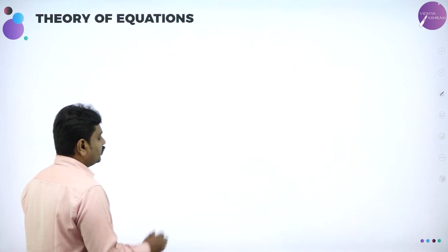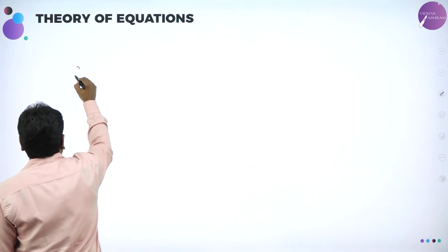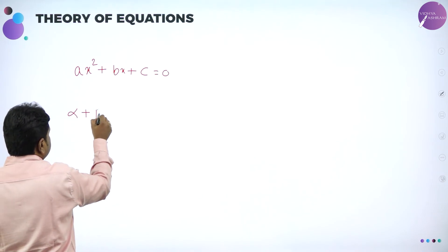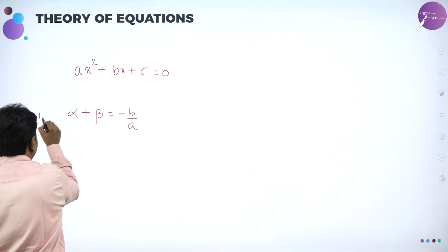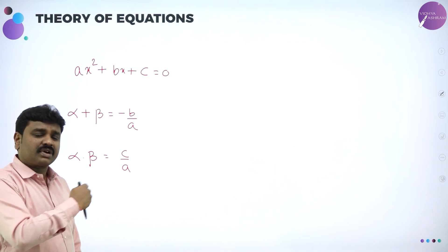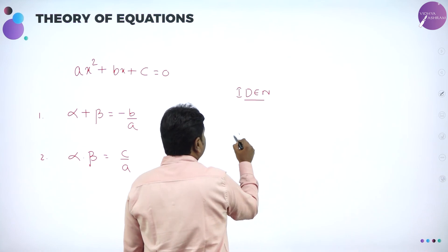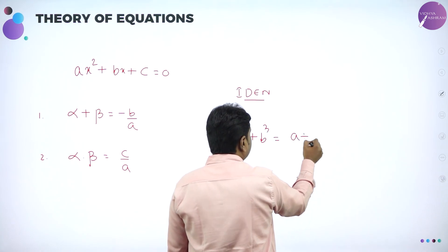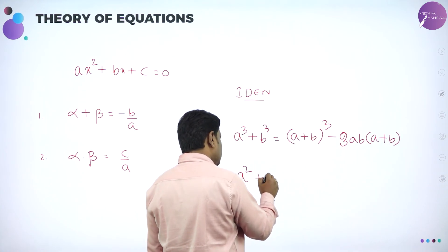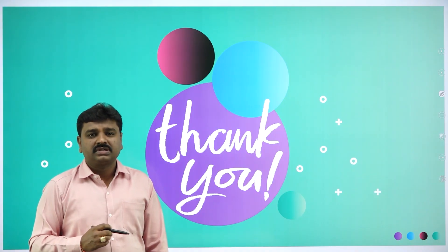In today's session, the basics: for any quadratic equation of the form ax squared plus bx plus c equal to 0, we have two roots alpha and beta. Sum of the roots is minus b by a, and product of roots alpha into beta is c by a. These are the two basics used to solve all the problems. In between we also use algebraic identities: a cubed plus b cubed equals a plus b the whole cubed minus 3ab into a plus b, and a squared plus b squared equals a plus b the whole squared minus 2ab. Thanks for attending, thank you.